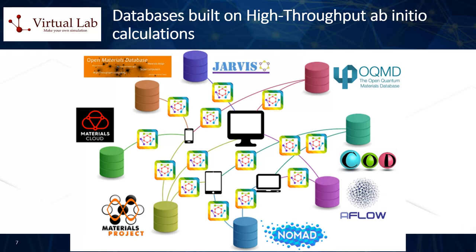Notable examples of experimental databases comprising only experimentally verified crystal structures are the Cambridge Crystallographic Data Centre (CCDC) and the Inorganic Crystal Structure Database (ICSD). On the other hand, databases derived from first principles computations such as high-throughput DFT studies may also contain hypothetical predicted structures which have not yet been synthesized experimentally.